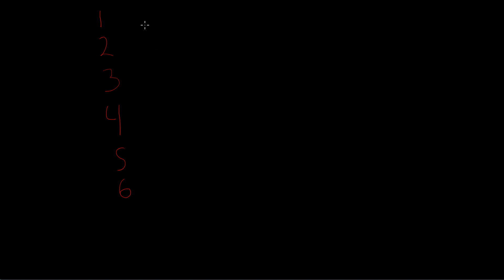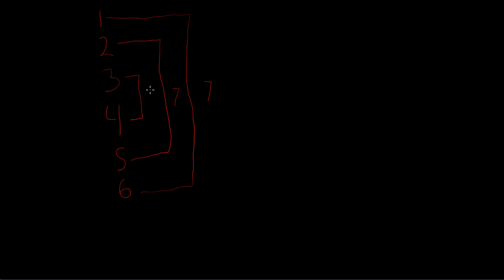But look, there's an interesting pattern that emerges here. If you add this one together with this one, you get 7. And if you add this one together with this one, you get 7. And if you add this one together with this one, you get 7. So 7, 7, 7, 7 — 21. It's 3 times 7. Dot notation is just a little bit more fun, I guess.